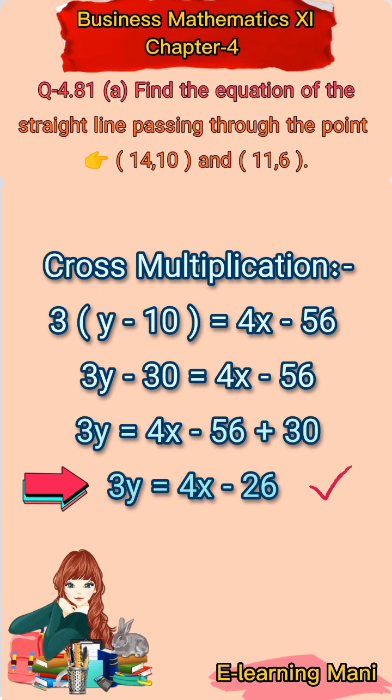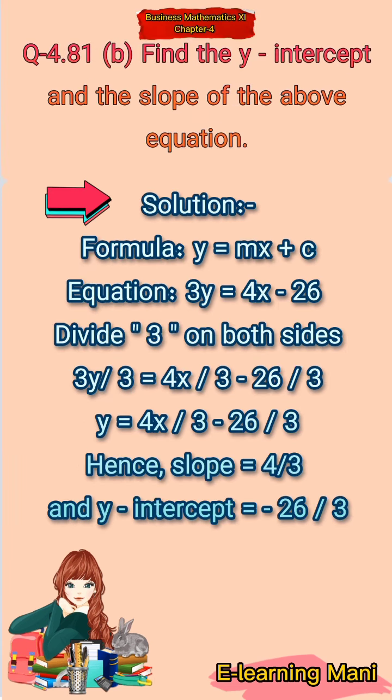अब हमें इसी equation की help से Part B solve करेंगे। B part है: find the y-intercept and the slope of the above equation। जो हमने equation find की थी उससे y intercept and slope find करेंगे। Formula: y is equal to mx plus c।